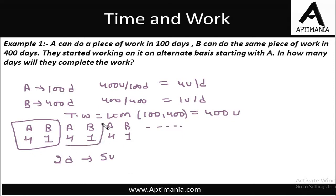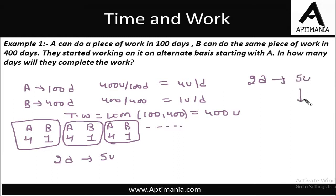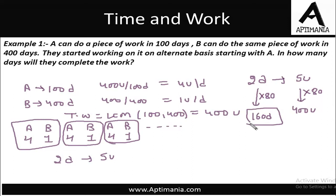On the next two days they are again completing 5 units, and the next two days again 5 units, and so on. So in two days they are completing 5 units, but they need to complete 400 units. To get 400 from 5, we need to multiply by 80. So here also we multiply by 80, giving us 160 days. So they will complete the work in 160 days working in this pattern.